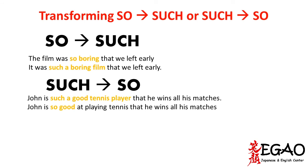Now let's talk about how to transform 'so' and 'such' in sentences. Both have different patterns, so when transforming, you must remember: 'so' goes with adjectives and adverbs, and 'such' goes with noun phrases. For example: 'The film was so boring that we left early.' Here 'so boring' is 'so' with the adjective.